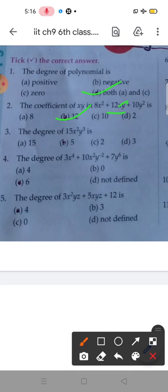Degree of this, so 2 plus 3 is 5, B option. Degree of this polynomial, highest power hai 6. So degree of polynomial is 6.